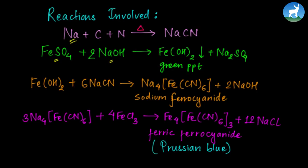This green precipitate reacts with sodium cyanide to form sodium ferrocyanide. When we treat with ferric chloride, ferric ferrocyanide is formed, which has a blue color indicating nitrogen presence.